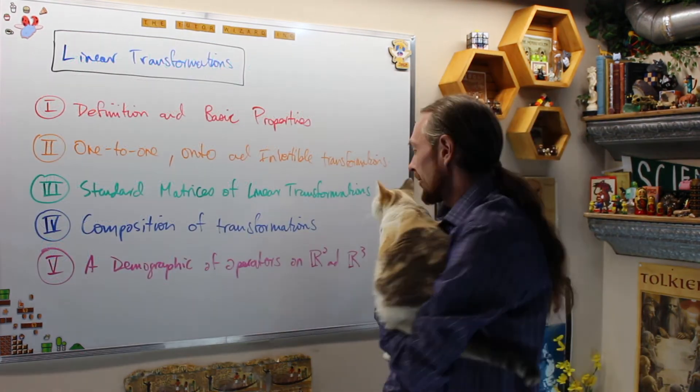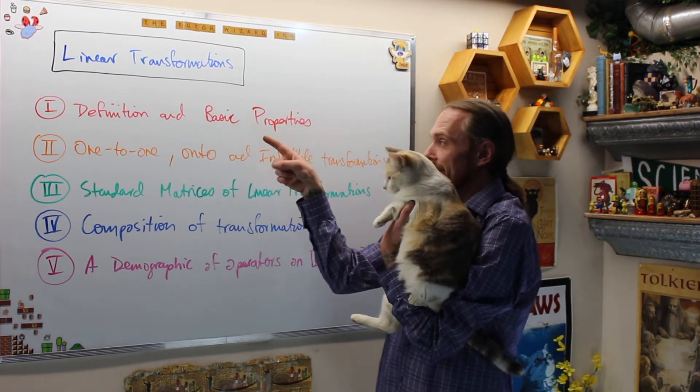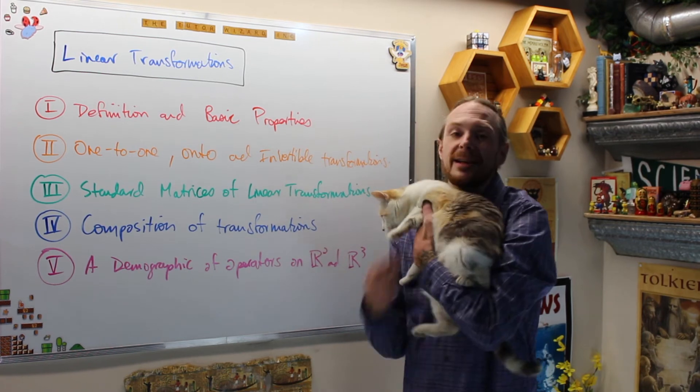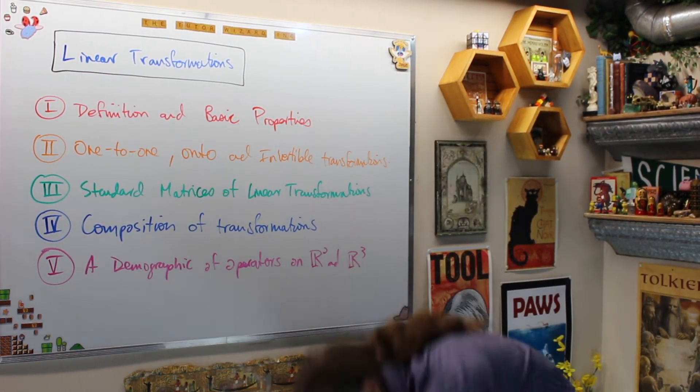And then now here comes the hard stuff. I know. This is the good stuff. Linear transformations. Let me do the basic properties. Here we go. Okay. This one's Jasper. She's harassing us in the background anyway. Okay, go play.